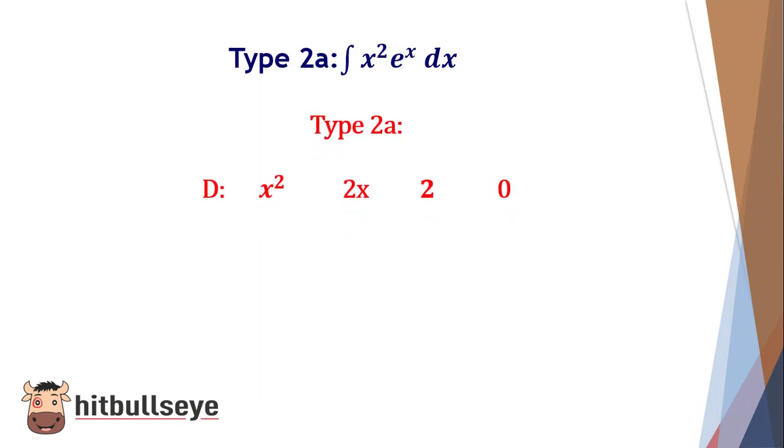Similar approach will be applied. You have to copy the first part, that is x², and keep differentiating it. That will be 2x, 2, and 0. And for the integration of e^x, you must be knowing that it is always e^x only. The integration for e^x is always the same.